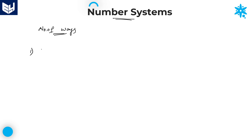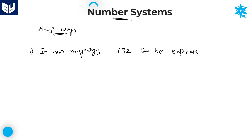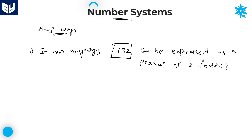See here. First question. The general format of asking the question is: in how many ways can 132 be expressed as a product of two factors? This is the general format in which the question will be asked.